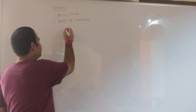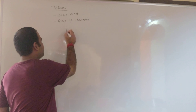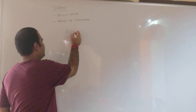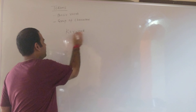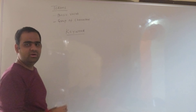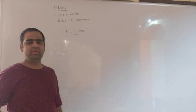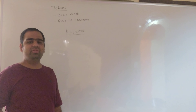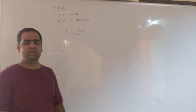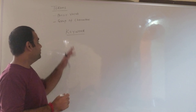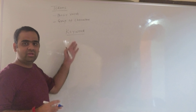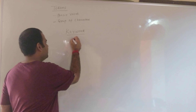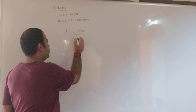There are different types of tokens and the first type we will study is a keyword. A keyword is a reserved word whose meaning cannot be changed. In natural language as well we have some reserved words — for example, 'school'. The implicit meaning of school cannot be changed. Similarly, the meaning of keywords cannot be changed. They are reserved words.